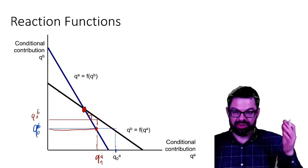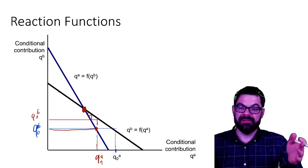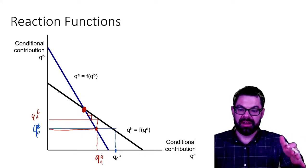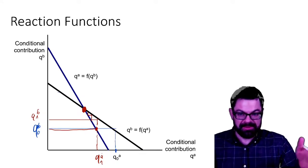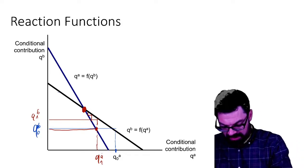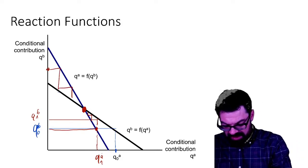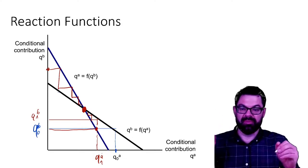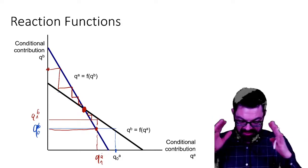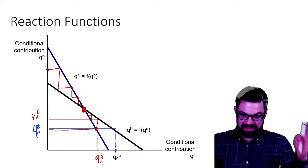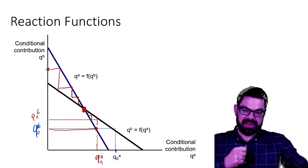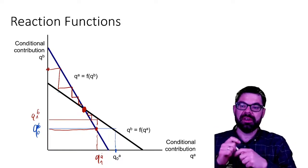At the crossing point, no player has an incentive to deviate because they can't make themselves better off. In any other point, the process converges to this equilibrium. The logic is that players make all decisions simultaneously and reach that equilibrium because each considers the best response to the actions of the other.